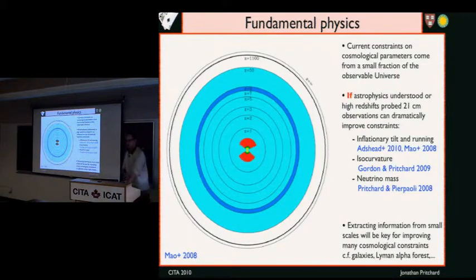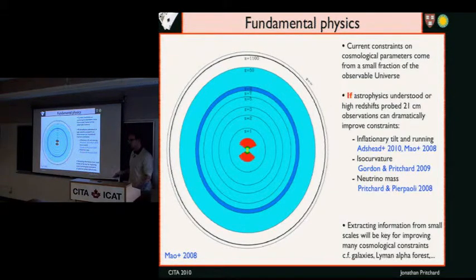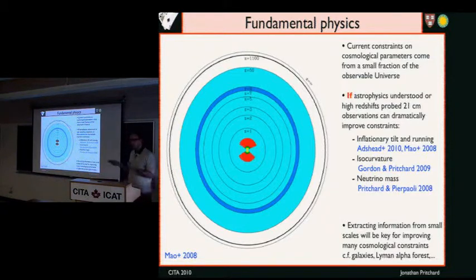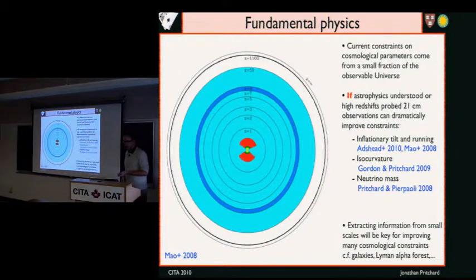In the future, one might look to do fundamental physics with 21-centimeter observations to go after cosmology. At every redshift the key point is that the constraints we currently have come from a very limited volume of space — from the thin slice that is the CMB, or from things like the Sloan survey. There's a lot of volume in between that you'd like to fill in to improve your constraints on cosmology. Doing that with 21-centimeter is challenging because you've got a lot of astrophysics that you need to understand first, but possibly in the further future that's something we're going to do.